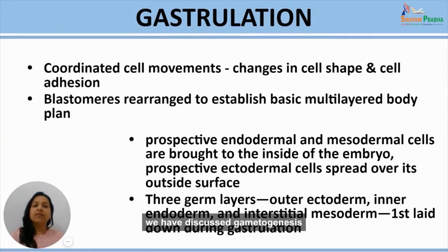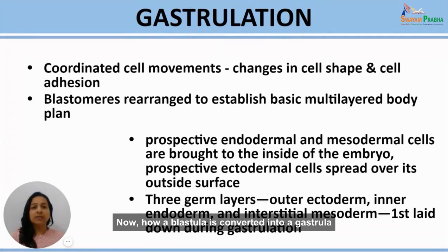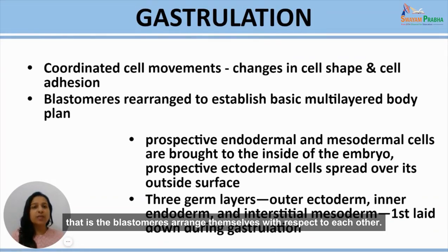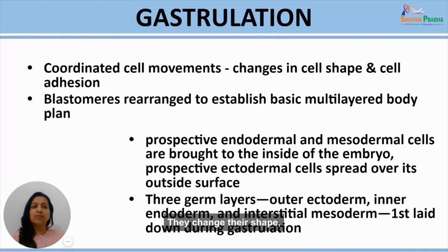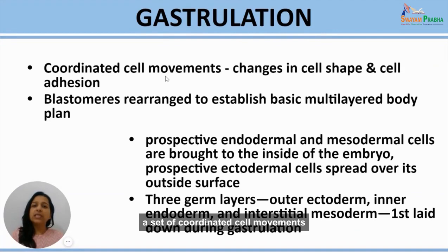In the previous lectures, we discussed gametogenesis and how male and female gametes fuse during fertilization to create a zygote. The zygote then divides into a number of cells, first forming a morula and then a blastula. Gastrulation is the process by which a blastula is converted into a gastrula — a set of coordinated cell movements involving changes in cell shape and cell adhesion.